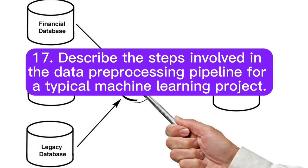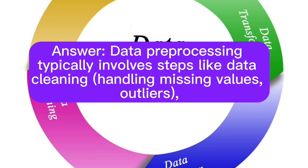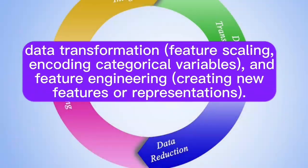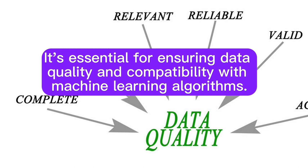Question 17: Describe the steps involved in the data preprocessing pipeline for a typical machine learning project. Answer: Data preprocessing typically involves steps like data cleaning (handling missing values, outliers), data transformation, feature scaling, encoding categorical variables, and feature engineering (creating new features or representations). It's essential for ensuring data quality and compatibility with machine learning algorithms.